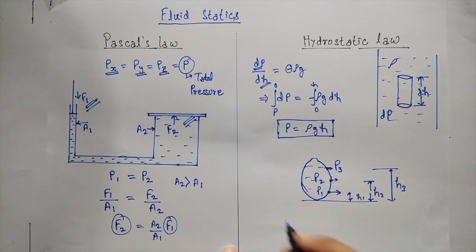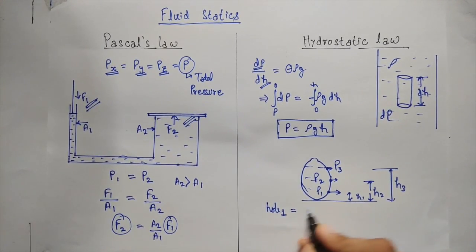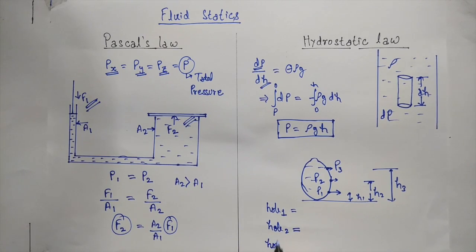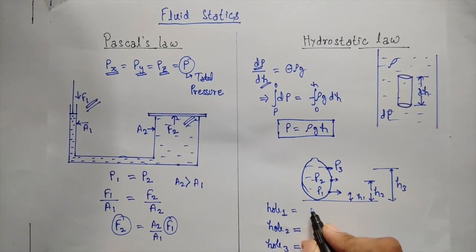Now we will find that the water coming out from hole number one will be high, while from hole number two will be slightly less, and from hole number three will be very less. That is the pressure at higher height decreases.